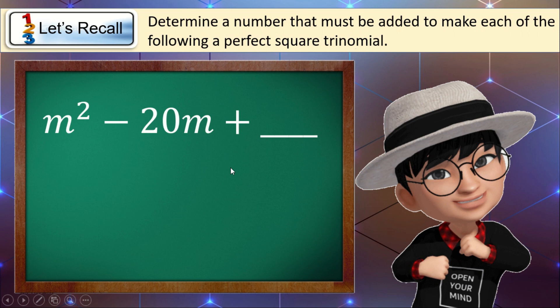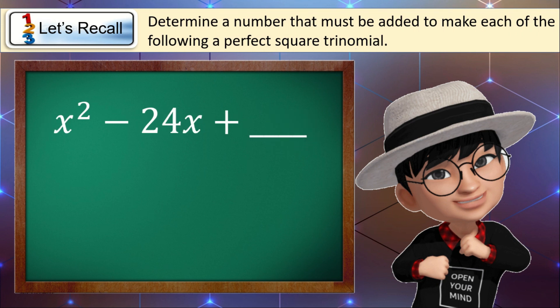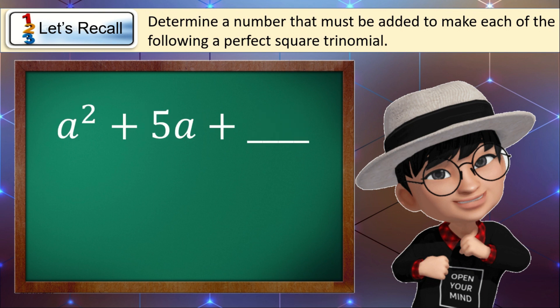Now it's your turn. What number must be added to m squared minus 20m? The answer is 100. For x squared minus 24x, the answer is 144. And for a squared plus 5a, the answer is 25 over 4.